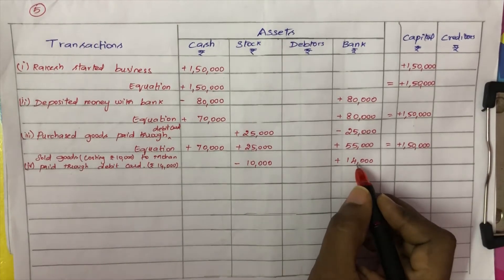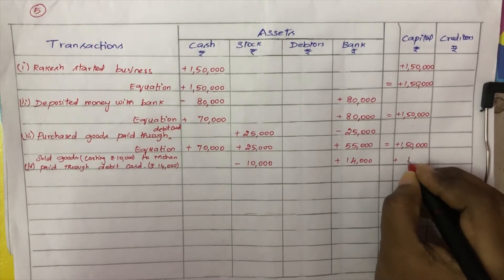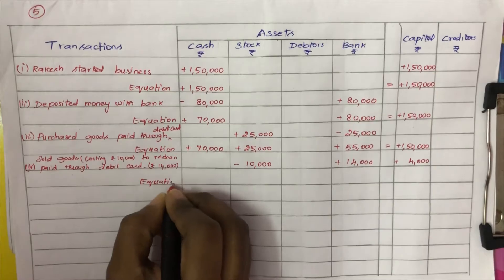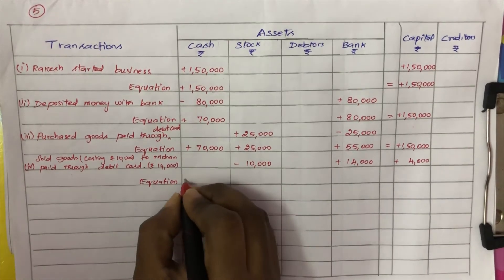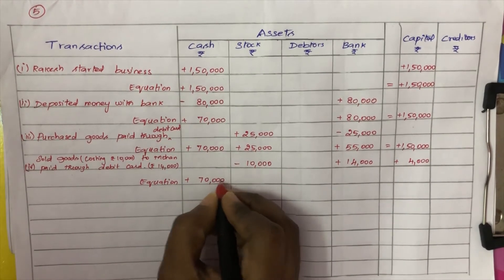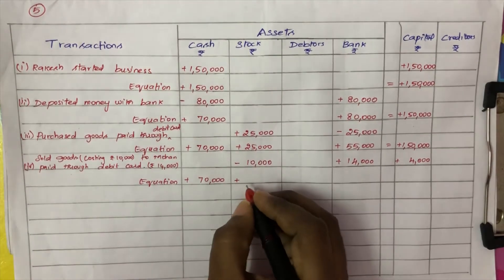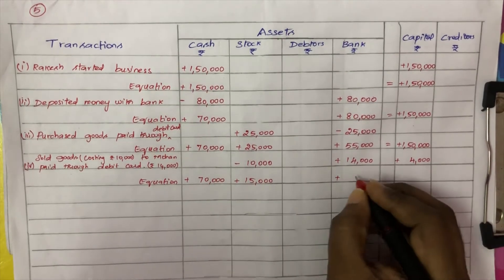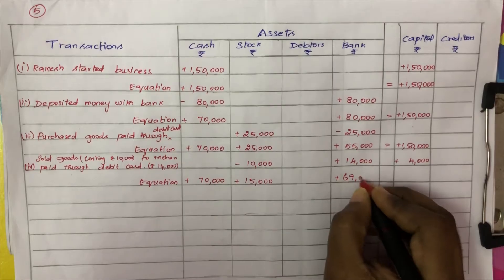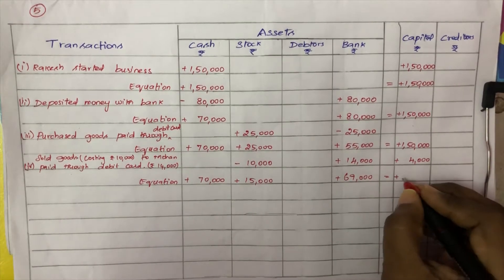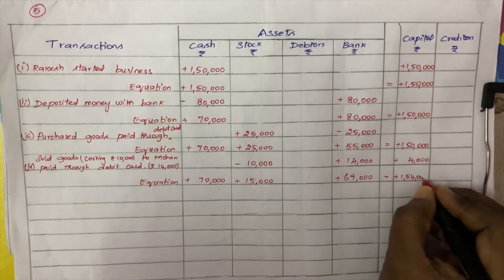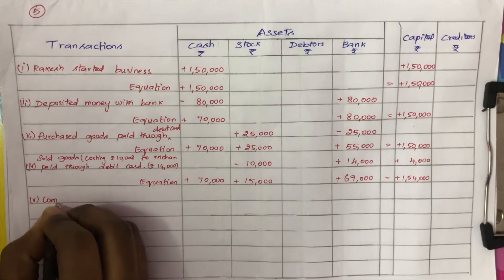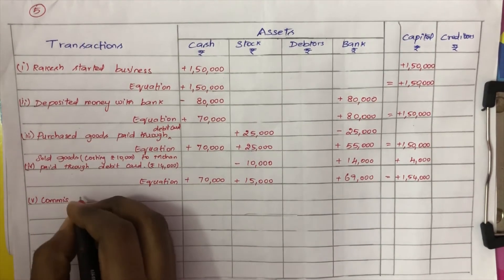The goods cost Rs. 10,000 but were sold for Rs. 14,000, so there is a profit of Rs. 4,000. This profit is added to the capital account. The updated equation: cash Rs. 70,000, stock Rs. 15,000, bank Rs. 69,000, equal to capital Rs. 1,54,000.